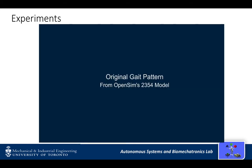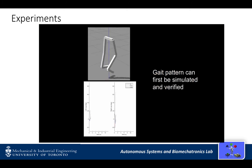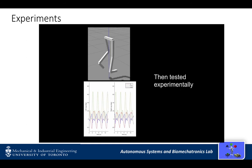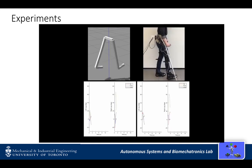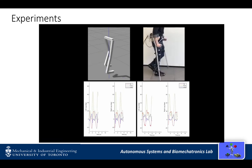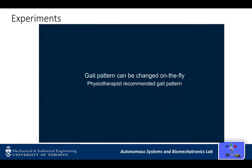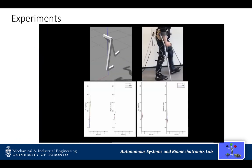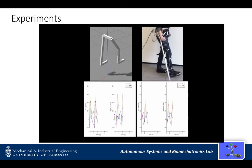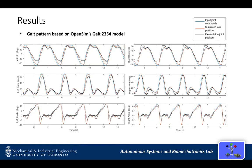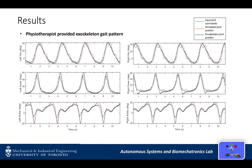To validate our approach, we conducted experiments with a healthy subject where first the gait pattern obtained from OpenSim was tested in simulation. The same pattern was then tested on the exoskeleton. The gait pattern was then altered on the fly to a physiotherapist-provided gait pattern. Our results show that the simulated and physical exoskeleton were able to follow the desired gait pattern, both from the OpenSim model and the updated physiotherapist-provided gait pattern.